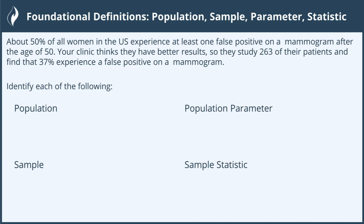Based on this information, we're going to identify several key terms. Let's start with the population and the sample. The population is the entire group being studied, and we do want to be specific — it's not just women, it's women in the U.S. specifically, so we're not talking about other nations. The population would be women located in the U.S. specifically.